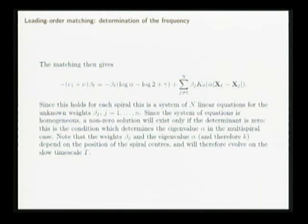Once you've got alpha, you can determine all the weights. From that you can see that alpha — since it depends on the distance, the separation of the spirals — means the eigenvalue, the asymptotic wave number, is going to change as the spirals move about slowly.